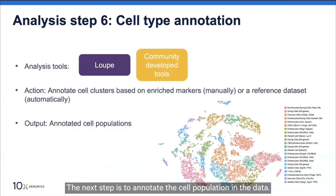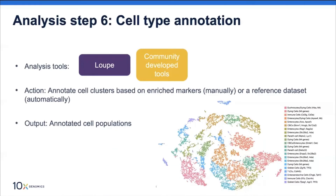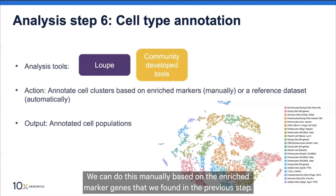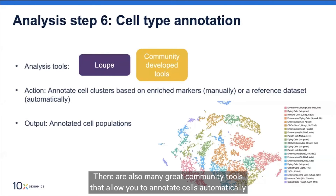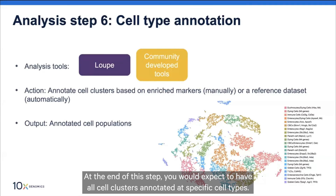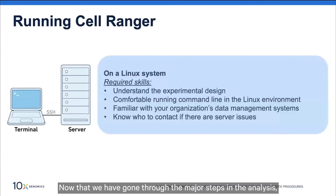The next step is to annotate the cell populations in the data. The goal is to figure out the cell type identity for each cluster. We can do this manually based on the enriched marker genes found in the previous step. There are also many great community tools that allow automatic cell annotation based on the correlation between your data and a reference dataset. At the end of this step, you would expect all cell clusters to be annotated as specific cell types.